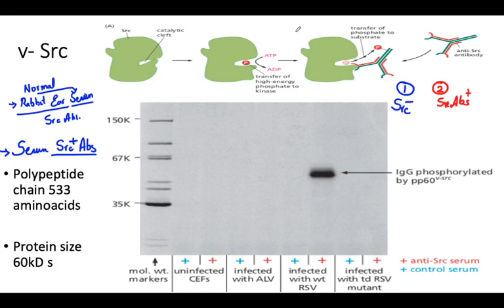We took two rabbits: R1 and R2. R2 was a tumor-bearing rabbit — blood was drawn and the serum was positive for SARC antibodies. R1 was the normal rabbit — blood was drawn and the serum was removed, and those antibodies are not SARC-positive. So we can compare these two.